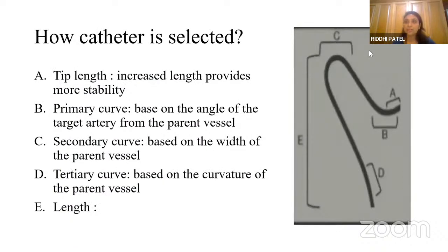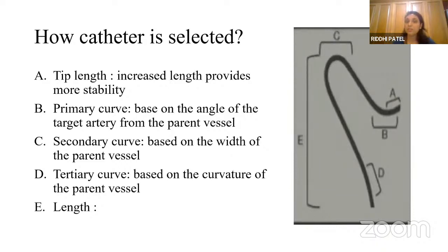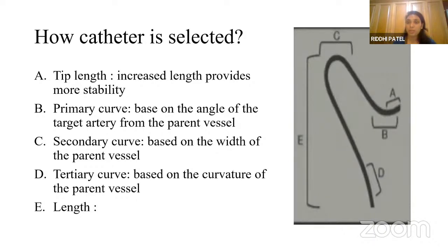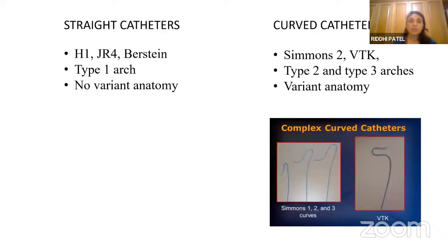Here we can see how the catheters are selected. A is tip length - increased length provides more stability, so complex catheters have more tip length compared to simple catheters. B is primary curve, based on the angle of the target artery from the parent vessel. C is secondary curve, based on the width of the parent vessel, as this part remains in the parent artery during cannulation. D is tertiary curve, based on the curvature of the length vessel. E is length.